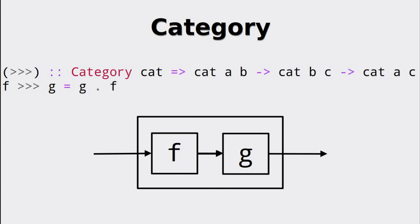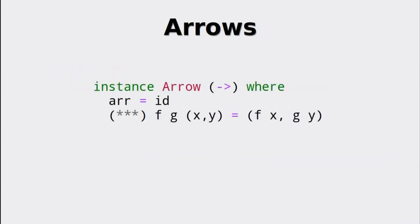So now we can define a new operator which will denote our composition — it's simply the category composition with flipped arguments. Since every arrow is a category, this definition also holds for arrows. This operator is where the name arrows comes from. The initial definition of the arrow class only consisted of the pirate function and this arrow operator. This has changed over the years, so we are covering the most recent definitions at the time of making this video.